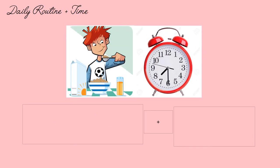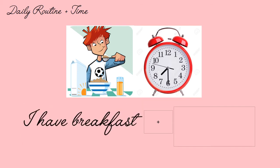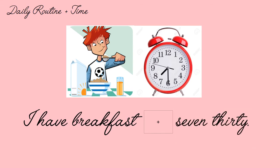Now, let's look at these two pictures and form the sentence. The first picture is... I have breakfast. That's right. And what about the second picture? Let's look at the clock and tell me what time it is. It's 7:30. Excellent. Now, to form the sentence, we need the little word. Do you remember what little word we need in the middle? Very good, guys. Let's repeat the sentence with me: I have breakfast at 7:30. One more time: I have breakfast at 7:30.